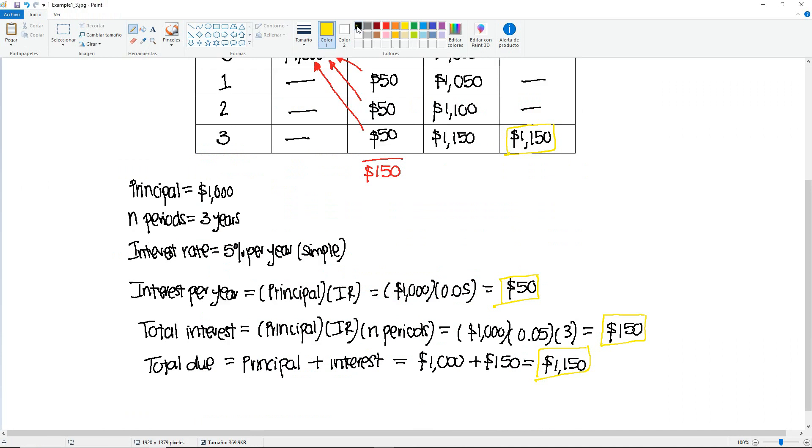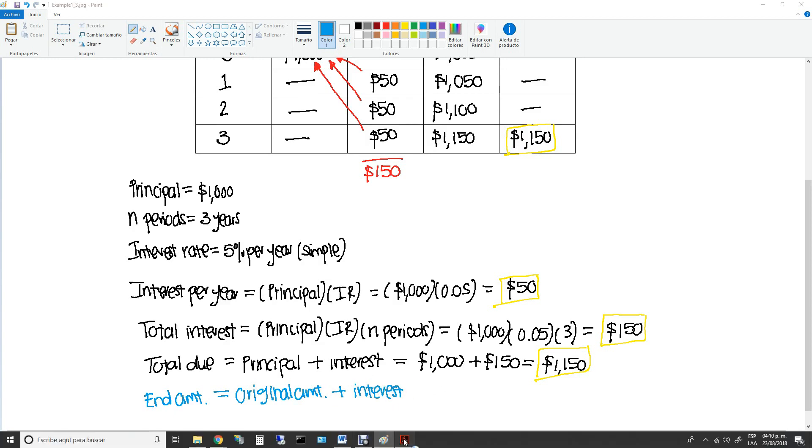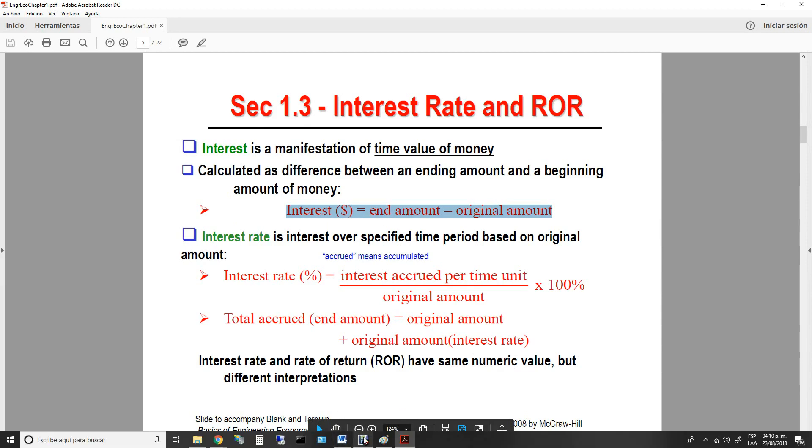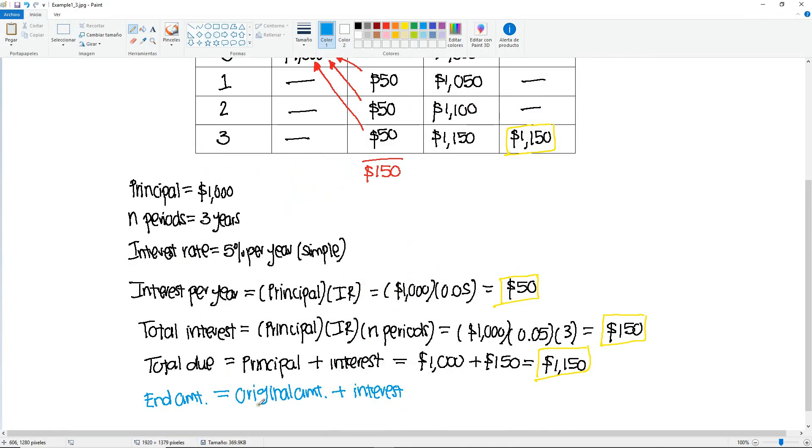So in this case, our total due, the total due would be the end amount. The principal is the original amount plus the interest. So this formula right here comes from slide or section 1.3. So in this case, you are just solving for the end amount.